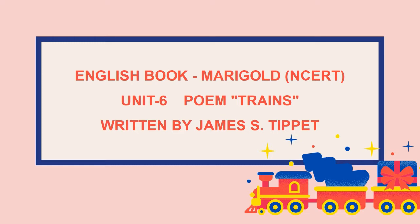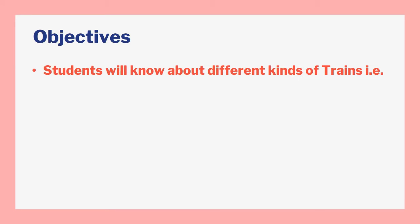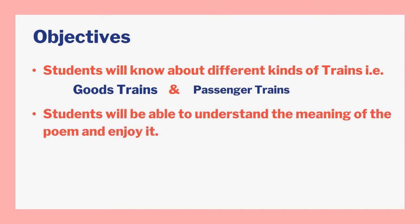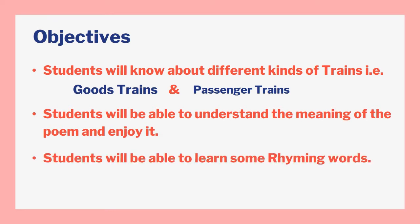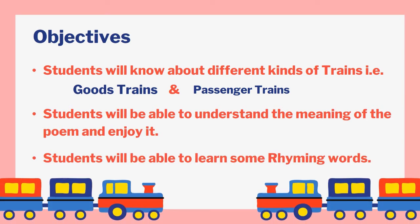He was a famous American educator and children's book writer. The objectives of this video are: students will know about different kinds of trains — that is, goods trains and passenger trains. Students will be able to understand the meaning of the poem and enjoy it, and will be able to learn some rhyming words.